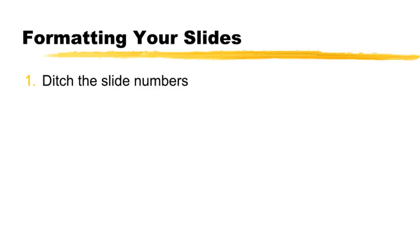Slide numbers just do not make any sense at all in a video. Think of all the YouTube videos you have watched. Did any of them have numbers or dates at the bottom of the screen? I doubt it. If you absolutely have to have a copyright notice, just put it on the first slide and not all of them.